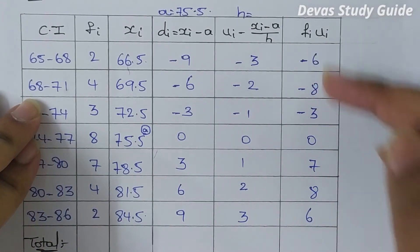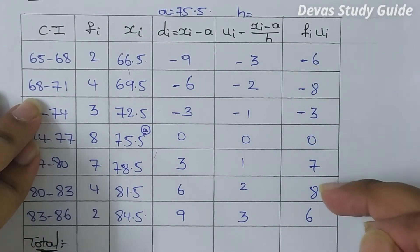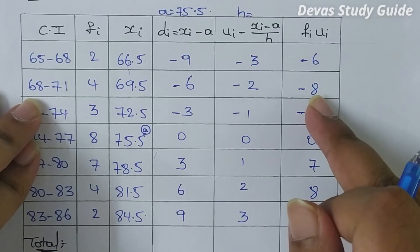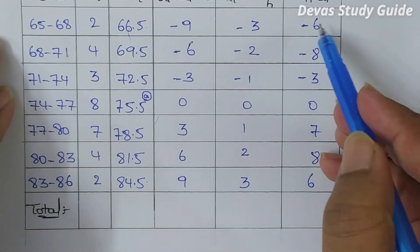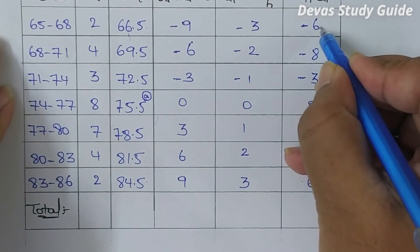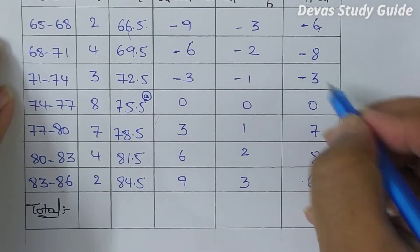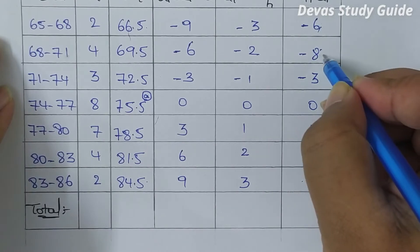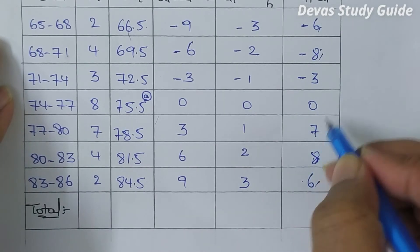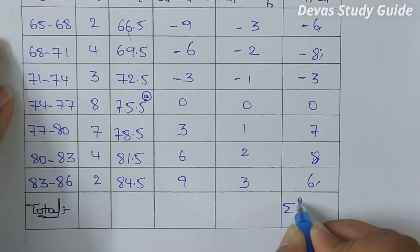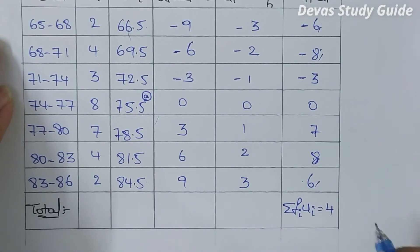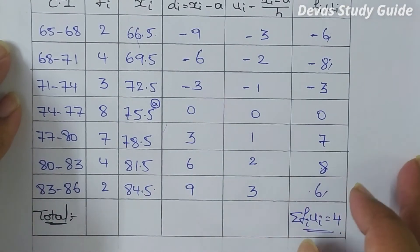Cancelling terms: minus 6 plus 6 cancel, minus 8 plus 8 cancel, 7 minus 3 is equal to 4. So sigma fi·ui is equal to 4.